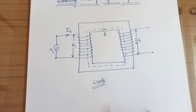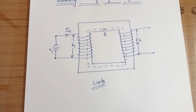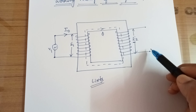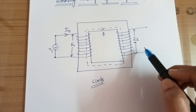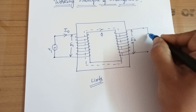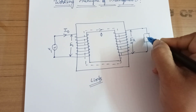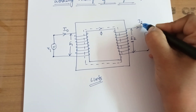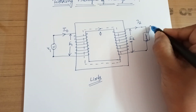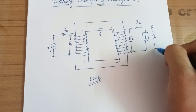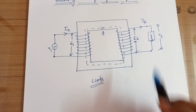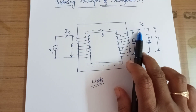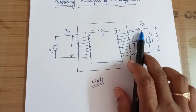EMF — electromotive force — moves electrons from one point to another. Since the secondary circuit is open, no current passes through it. This is the transformer operating under no-load condition. Now if we add a load, current I2 will circulate through the secondary circuit, and some voltage V2 — called the terminal voltage — will be present across the load.